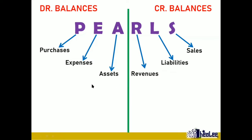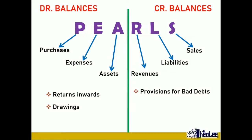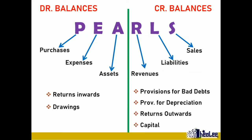We have a few more things that can fall under debit balances, and they are returns inwards and drawings — those items also carry debit balances. And for the credit side: provisions for bad debts, provisions for depreciation, returns outwards, and capital. Once you have this, you're able to easily generate your trial balance from a list of balances.